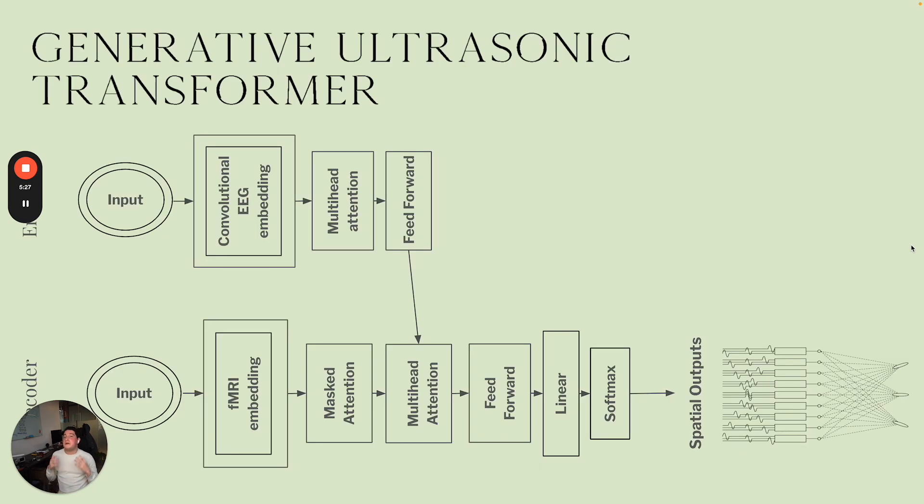This is the generative ultrasonic transformer architecture. Now, the important thing you'll see here is an encoder block, which is only trained on EEG data, and then the decoder block, which is trained on the fMRI data. So EEG to fMRI. What this model outputs is spatial targets for the neurostimulation. So we take naturally occurring, let's say, lucid dreaming data in and train the model so that it outputs the neurostimulation targets so that we can replicate the neural firing pattern, thus inducing the brain state.